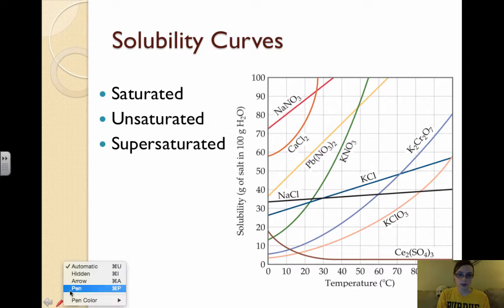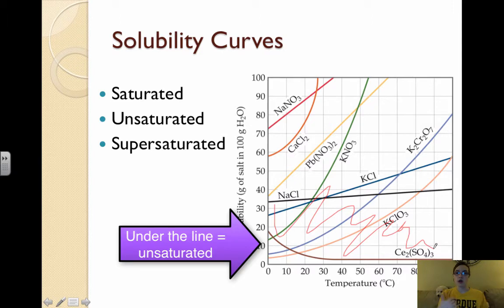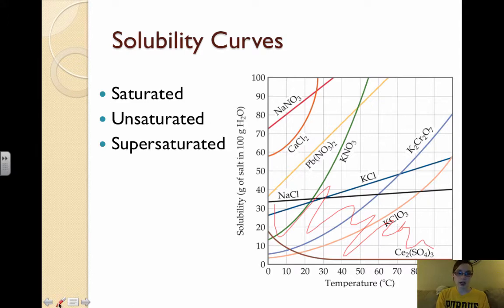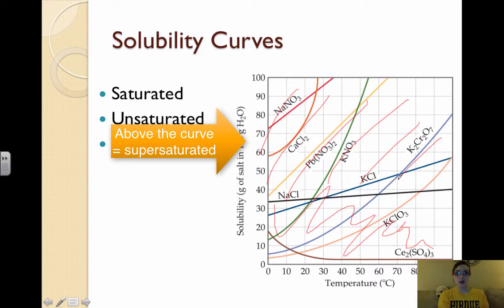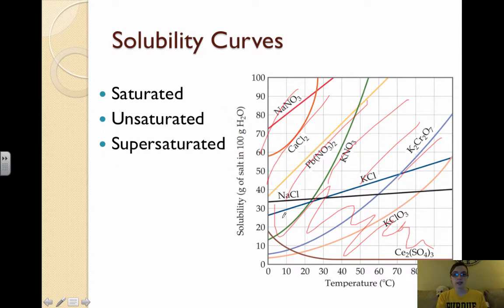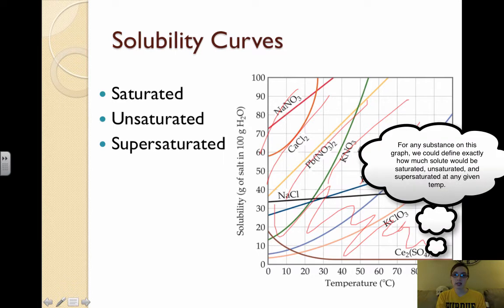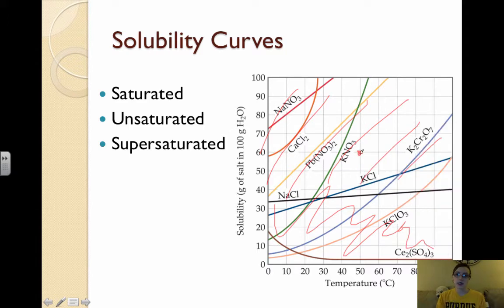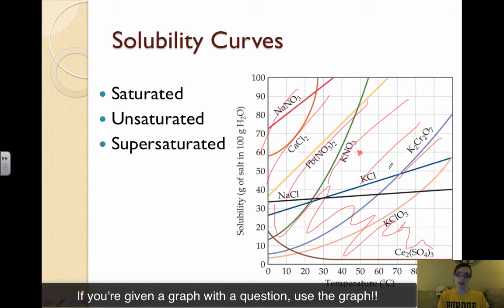Any point under the curve is unsaturated — we don't have enough solid in yet. Saturated is on the curve, unsaturated is below the curve, and anything above the curve is supersaturated — we've put more solute in than should be allowed. For example, if given a point of 60 grams at 50°C for sodium chloride in water, notice that this point is above the curve, so it would be a supersaturated solution.